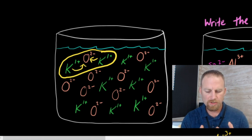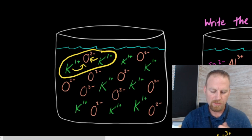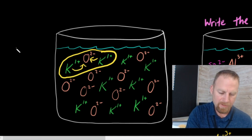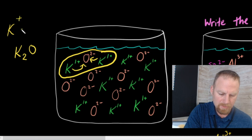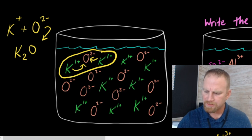Notice now there's no more charge. I have the same number of pluses and minuses. And so nothing else will be attracted to that molecule. And so in this case, we have K2O. So if it was written as K+, and you're combining it with oxygen, which is two minus, what would that yield? It would yield K2O, potassium oxide. Let's look at another example.